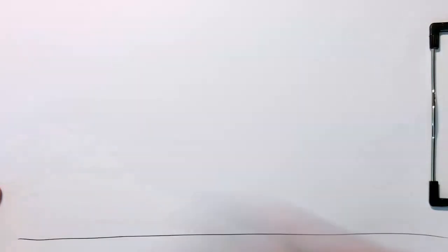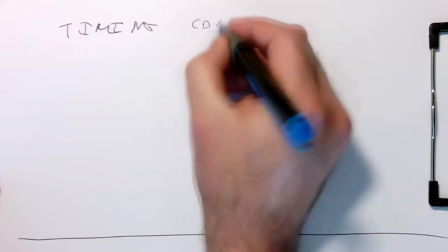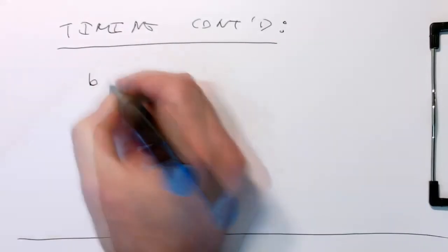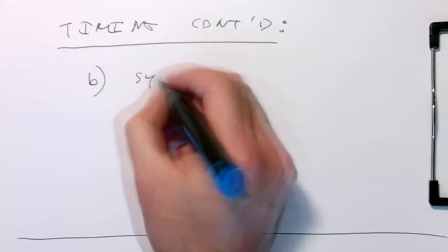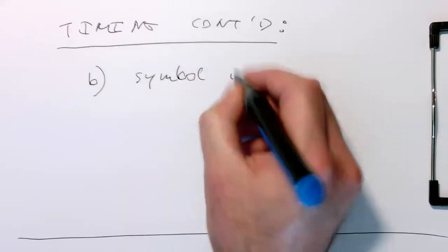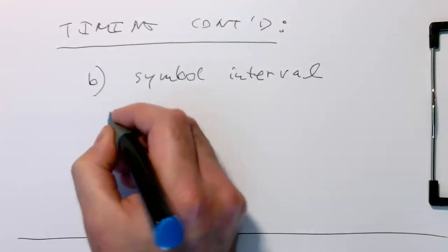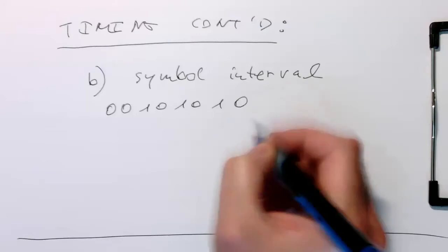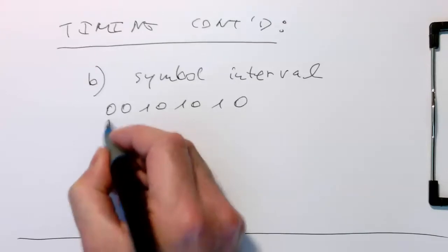Let's continue with the timing information. B, we've got another timing information, and that's our symbol interval. Remember, our Pac-Man is now represented as this nice stream of zeros and ones. And every zero here should become a symbol.